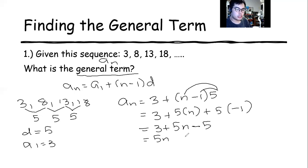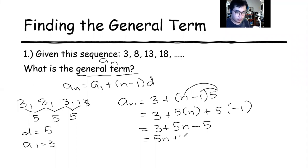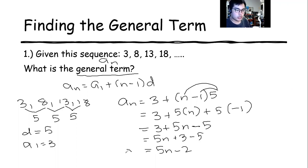We're going to arrange according to terms. So 3 minus 5, which is negative 2. Therefore, our general term for this sequence is 5n minus 2.